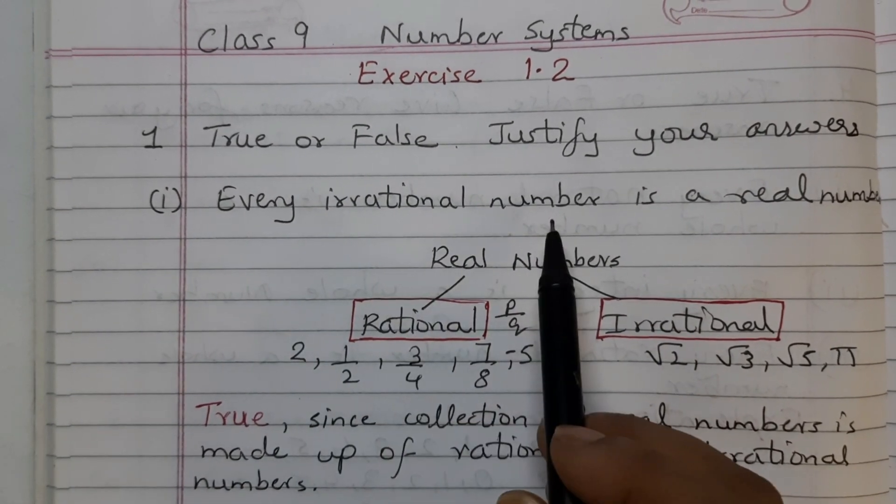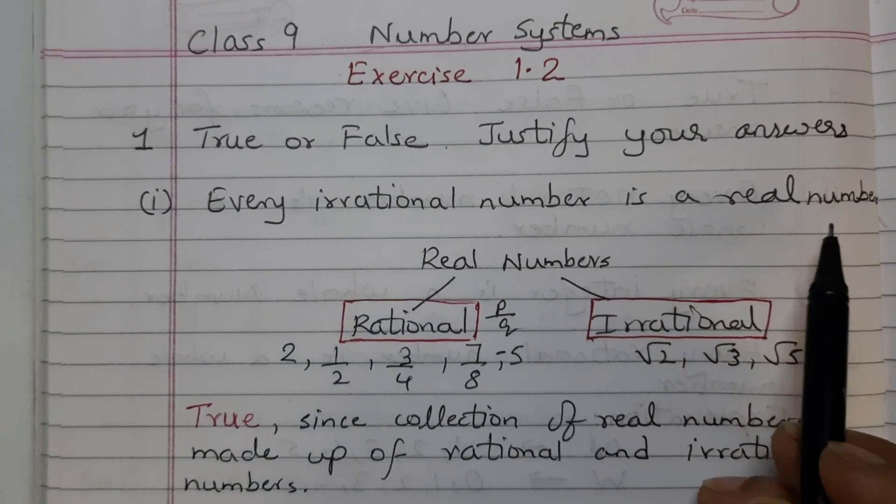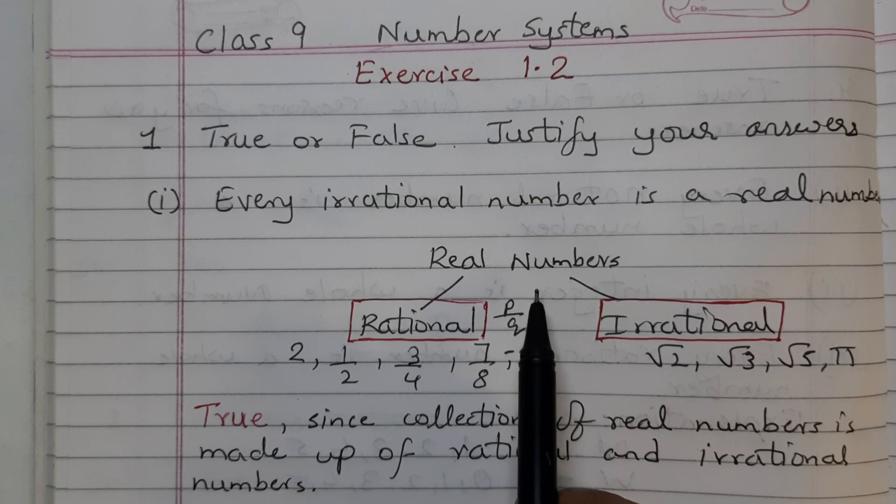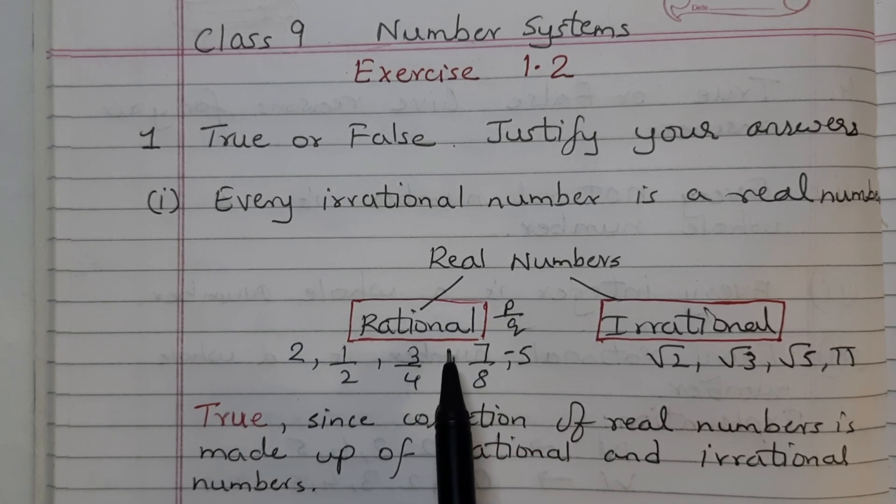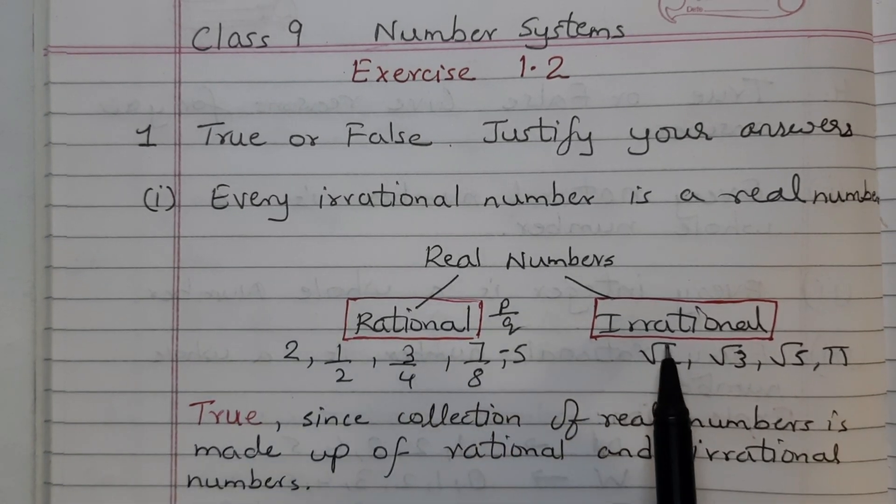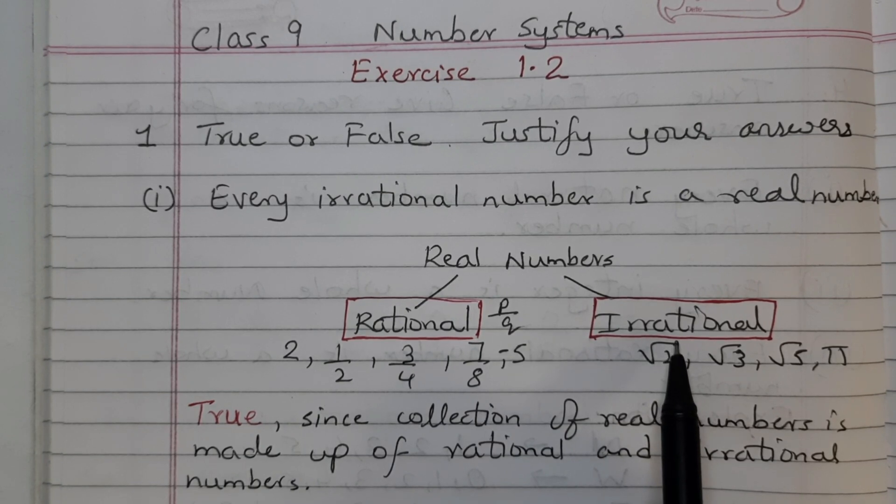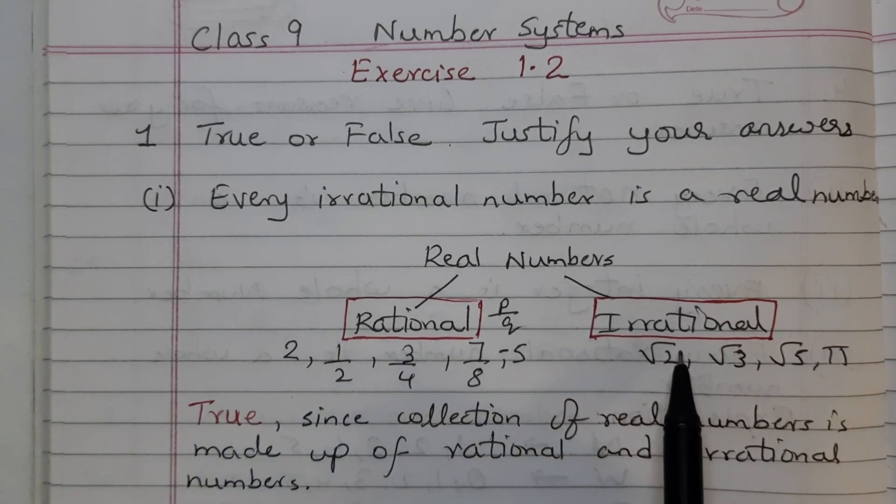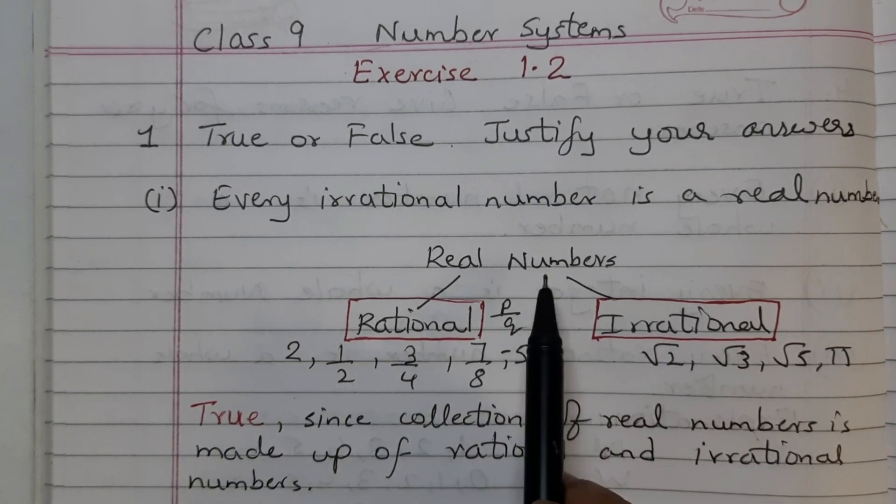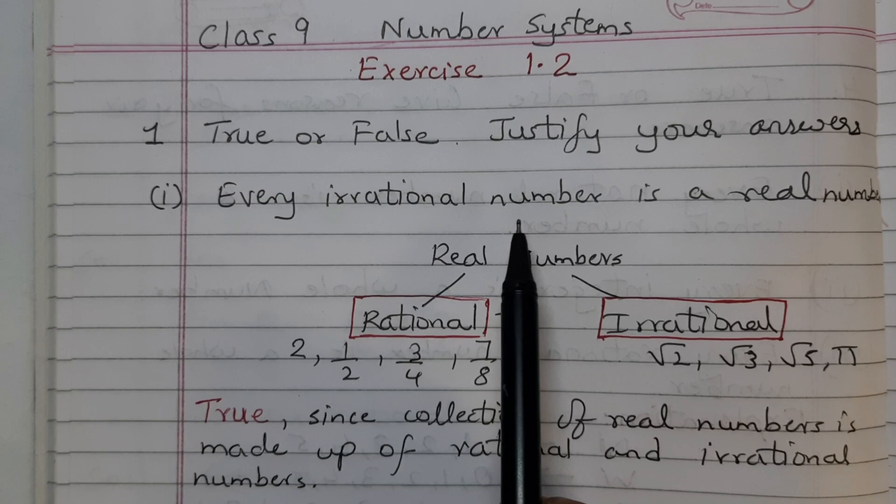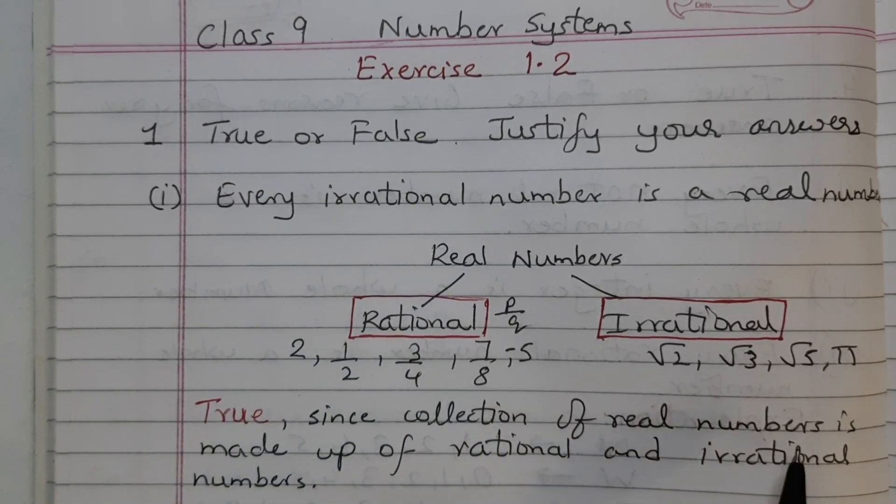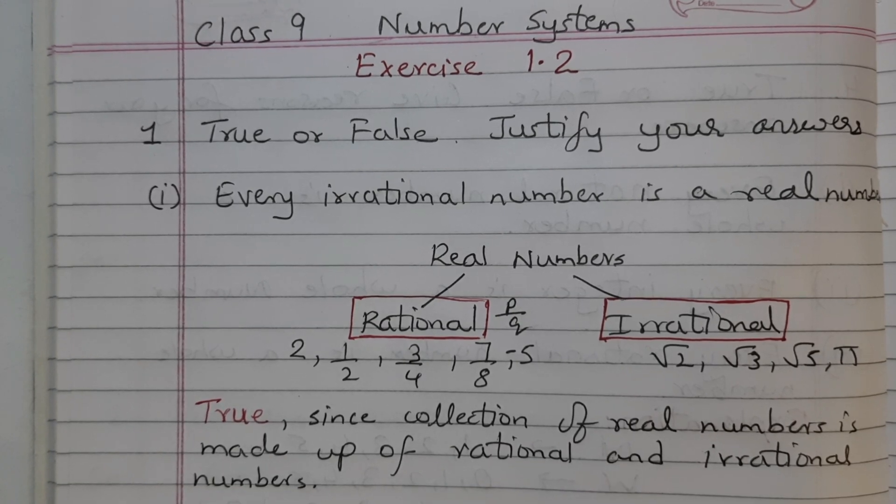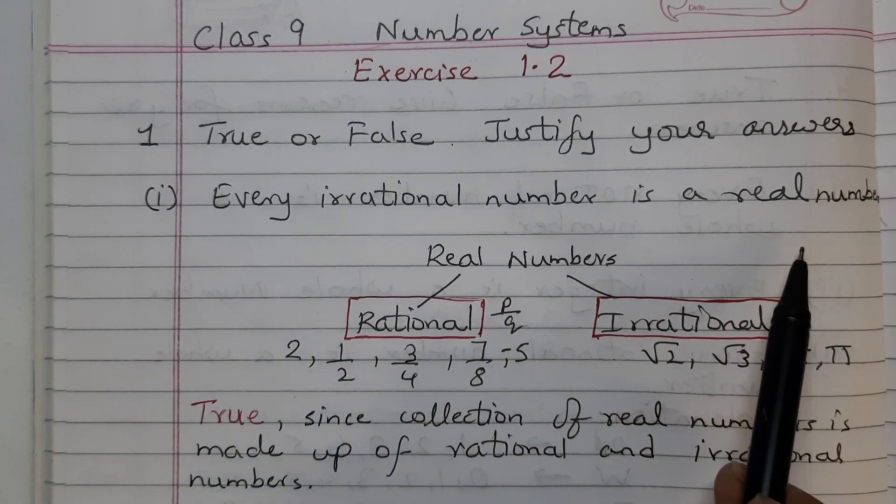Every irrational number is a real number. We know that real numbers is the collection of all rational numbers which can be written in the P by Q form and irrational numbers which cannot be written in the P by Q form. Rational numbers and irrational numbers together make the real number set. So this statement is true since the collection of real numbers is made up of rational and irrational numbers.